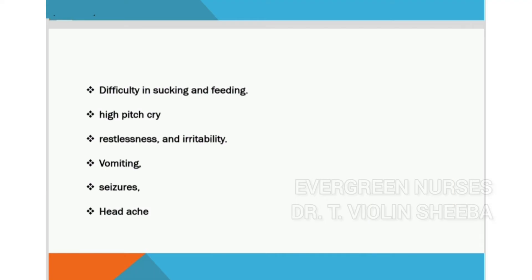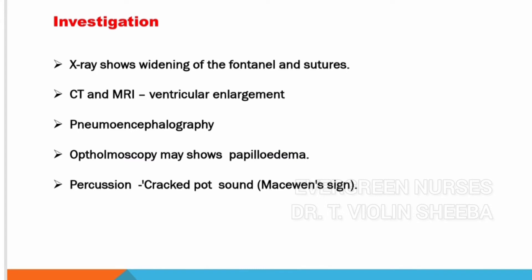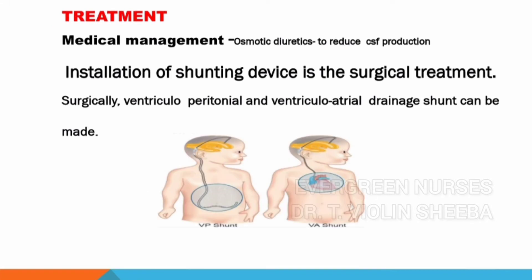The investigations for hydrocephalus include X-ray, which shows widening of the fontanelles and sutures. CT and MRI help to find any ventricular enlargement due to increased cerebrospinal fluid. Pneumoencephalography helps identify the location of obstruction and dilatation of the ventricle. Ophthalmoscopy is done to find any papilledema. Percussion of the skull will produce a cracked-pot sound known as Macewen's sign.